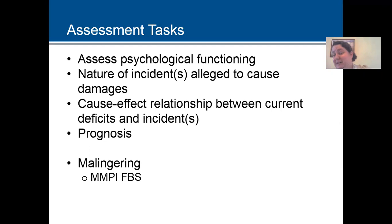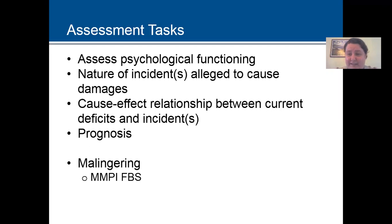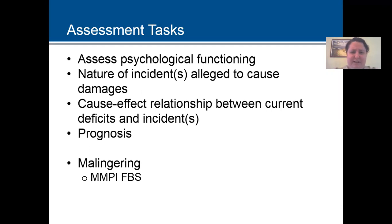Sometimes the defendant could be an insurance company, and the defendant wants you to say you can't establish a link. You're trying to do retrospective assessment here, and as we've talked about before, that's really difficult. In these cases it's often years beforehand and you're trying to reconstruct it, getting psychological functioning from whatever data you could find.